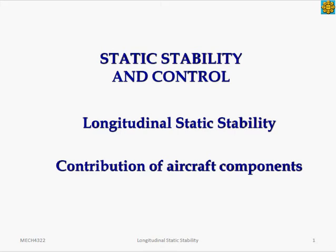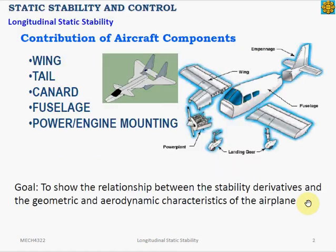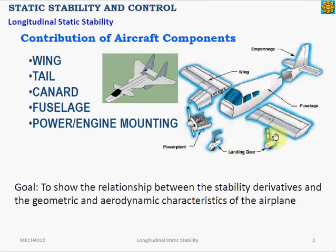Let's analyze the static stability of an aircraft by its individual components. We break down the aircraft into its main components and look at each component's contribution to the aircraft's longitudinal static stability. The main components are the wing, the tail, the canard (a forward wing on some aircraft), the fuselage, and the engine normally mounted underneath the wing. We want to show the relationship between the longitudinal stability derivative and the geometric and aerodynamic characteristics of the airplane.